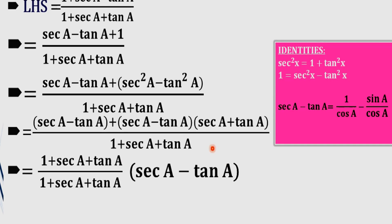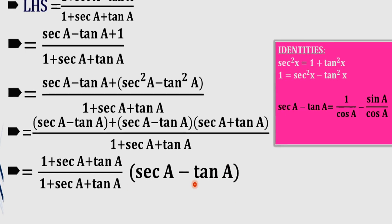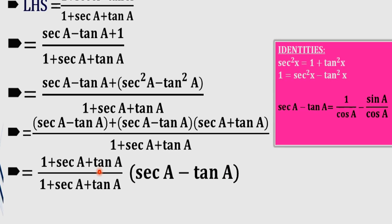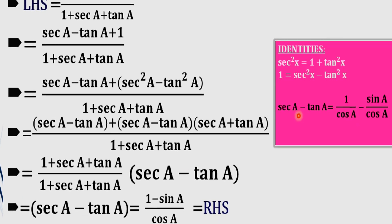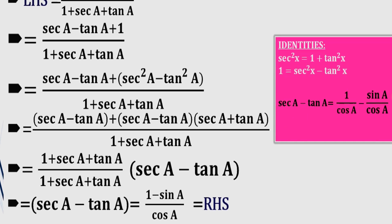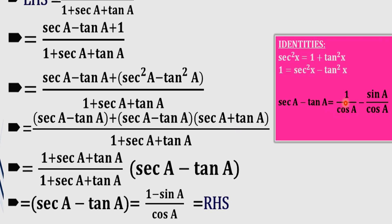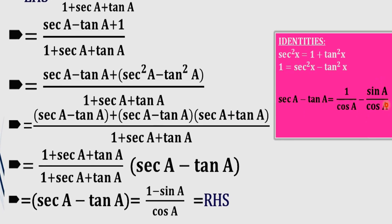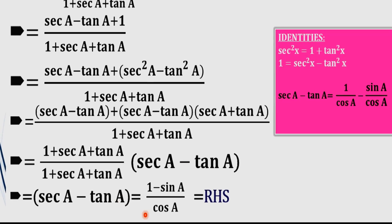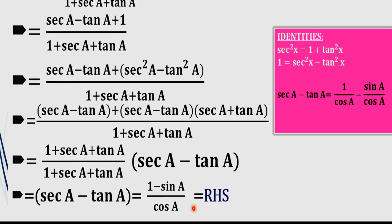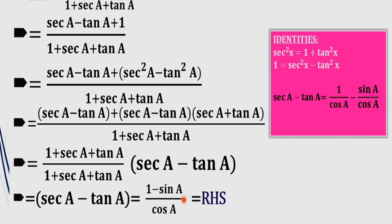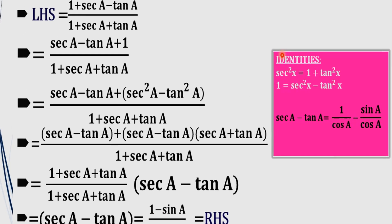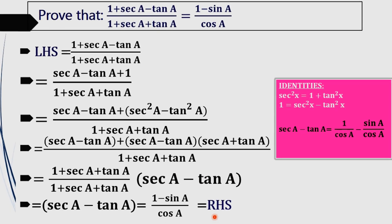We cancel numerator and denominator, and what remains is csc A minus tan A. Then substituting: csc A is 1/cos A and tan A is sin A/cos A. Taking cos A as the common denominator, the numerator becomes 1 minus sin A. So we get (1 minus sin A)/cos A, which is our required RHS.